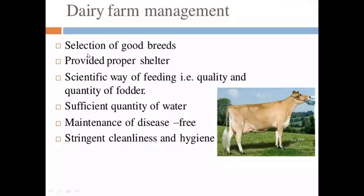Dairy farm management involves the selection of good breeds, providing proper shelter, scientific way of feeding, sufficient quantity of water, maintenance of disease-free conditions, and cleanliness and hygiene. The five aspects of rearing — breeding, shelter, feeding, medical care, and personal care — are all present here. That's why dairy is defined as the process of rearing and management of cattle such as cows, goats, and buffaloes for the production of milk and milk products.